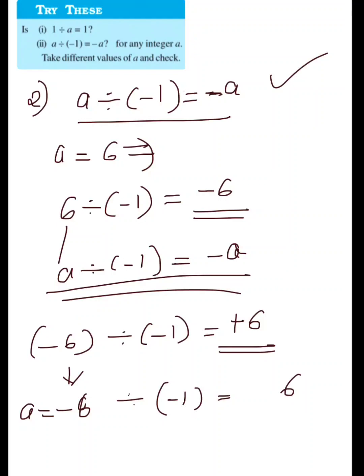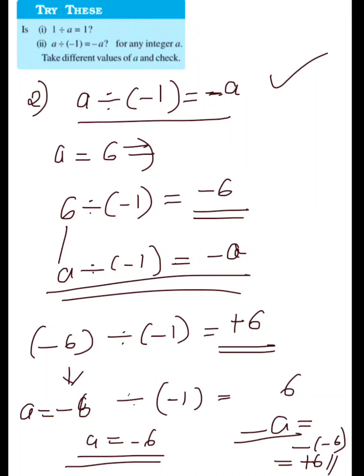Here A equals minus 6, and when you divide minus 6 by minus 1 you get 6. That 6 is minus A, because if A is minus 6 then minus A equals minus of minus 6, which equals plus 6. So A divided by minus 1 equals minus A — this is true.